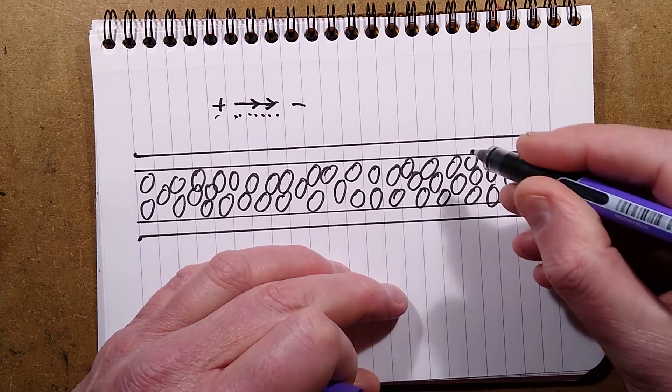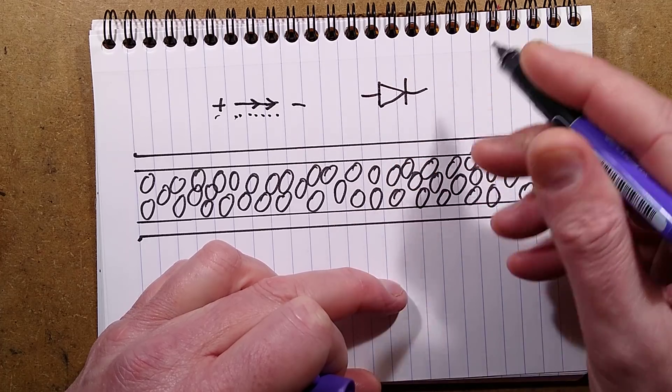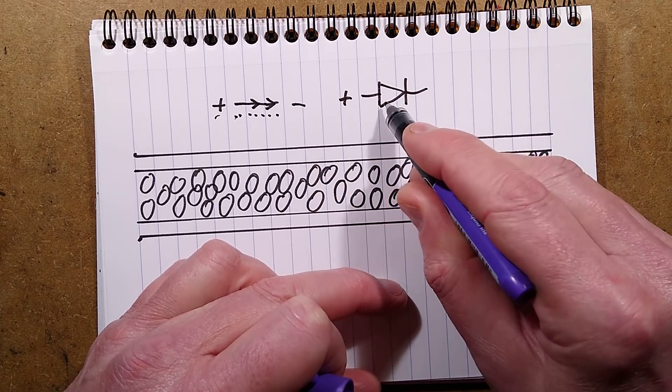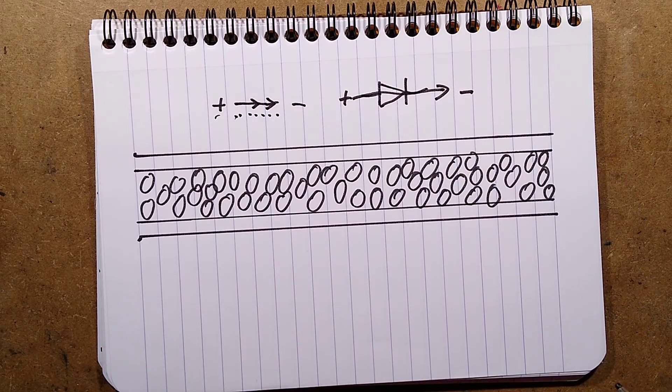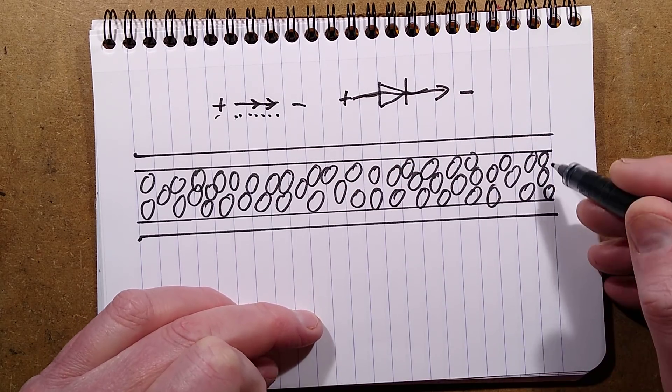But unfortunately, by that time, they'd done all the sort of electrical and electronic symbols. So when you think of it, I prefer to stick to conventional theory, positive to negative, because that way the diodes are all the right way. But in this instance, I'm going to make a concession. I'm going to talk on electrons.